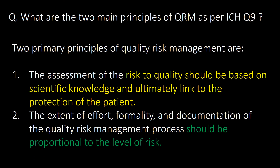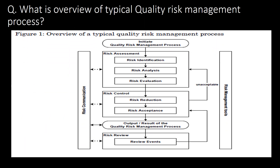What are the two main principles of QRM as per ICH Q9? The two primary principles are: first, the assessment of the risk to quality should be based on scientific knowledge and ultimately linked to the protection of the patient; secondly, the extent of effort, formality, and documentation of the quality risk management process should be proportionate to the level of risk.